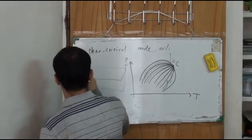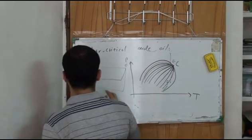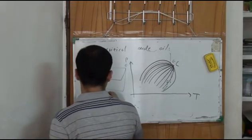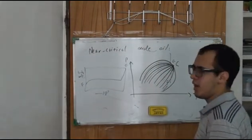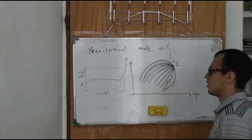The axes show liquid volume percent versus pressure. This is for near-critical oil.